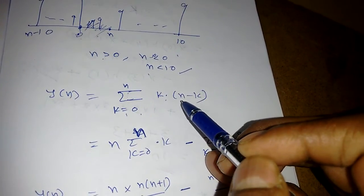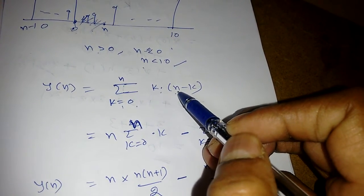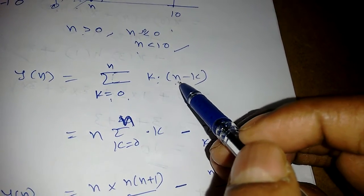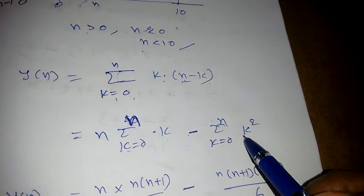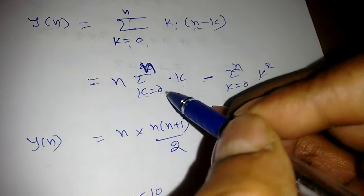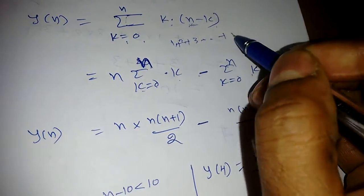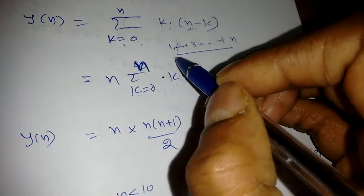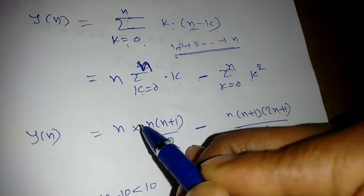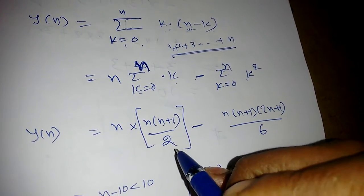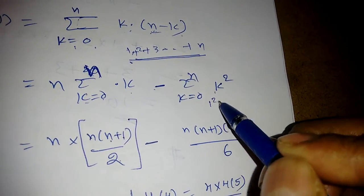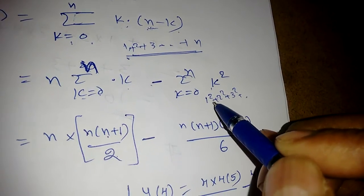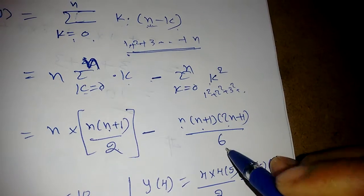In the common region, x[k] = k and x[n-k] = n-k. So y[n] = Σ k(n-k) for k=0 to n. Expanding: y[n] = n·Σk - Σk². Using the formula Σk = n(n+1)/2 and taking n common, we separate the terms.